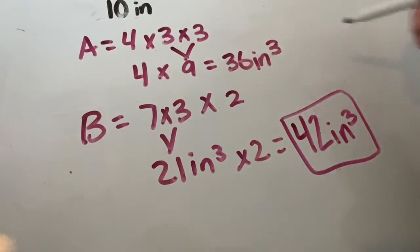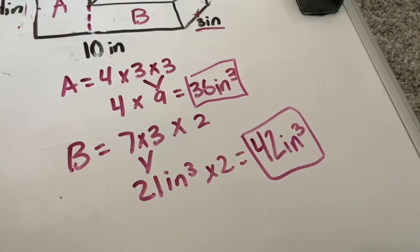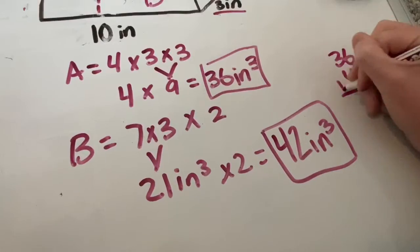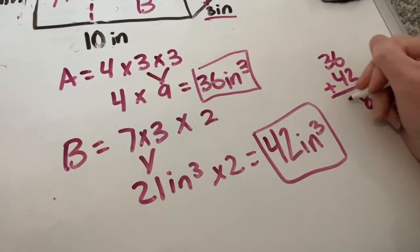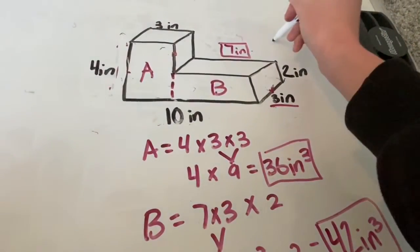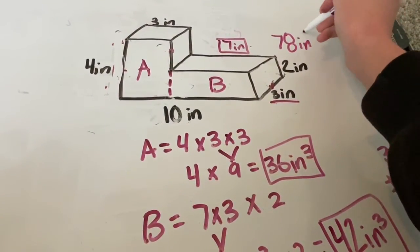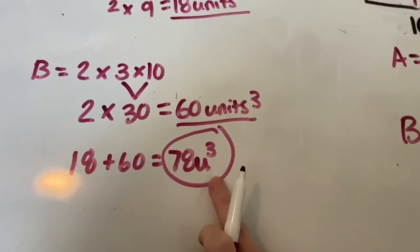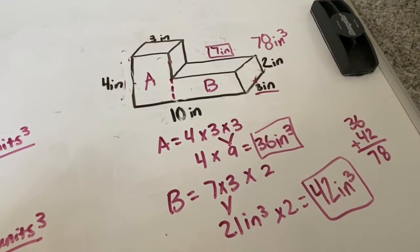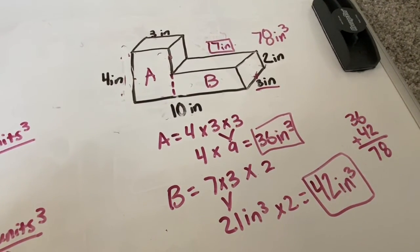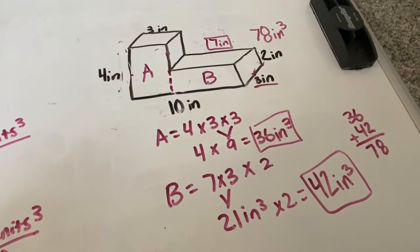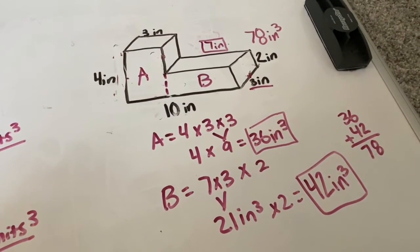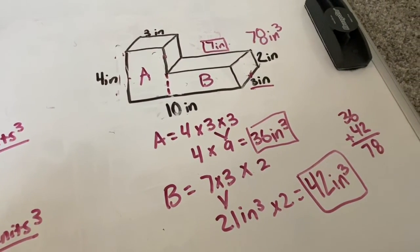So now I have figure B is 42 and figure A is 36. Let's add those up and see if we get the same answer. Six plus two is eight. Three plus four is 78. So again, we still get 78 inches cubed, which is what we should be getting, because it's the same as what we did over here. So that's two different ways you can separate a composite volume figure. And you should get the same answer no matter how you separate them. Because you're not changing the figure, you're just changing the way that you're solving for the composite volume.